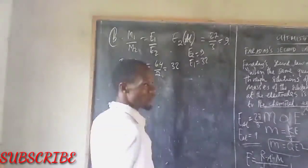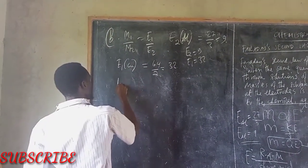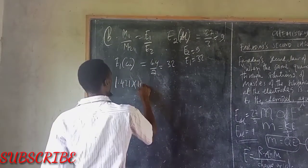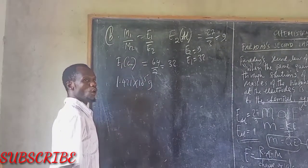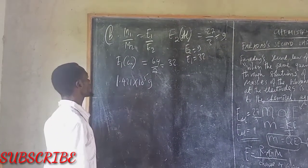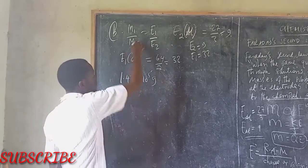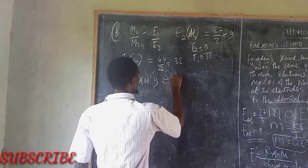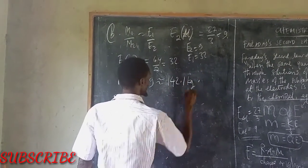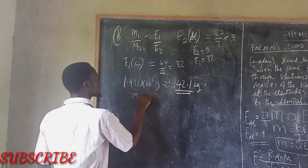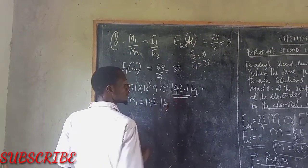But remember, we have M1, mass of copper. We have got this 1.42 times 10 power 5 grams. This is what we have done. You may approximate, no problem, because it is all about relation. This is mass 1, equal to 142.1 kilograms.